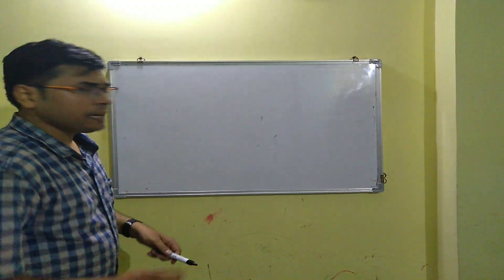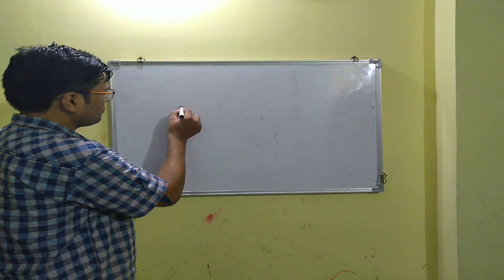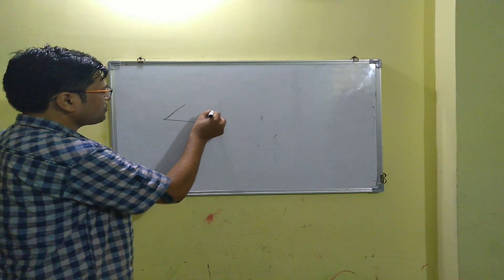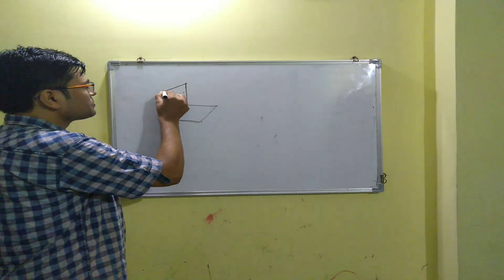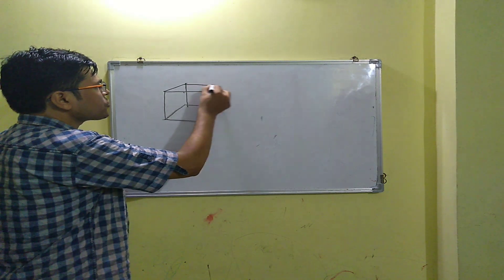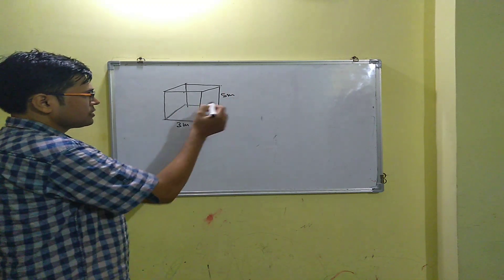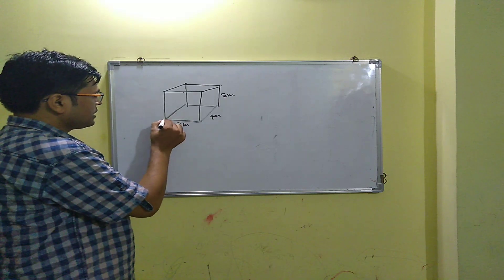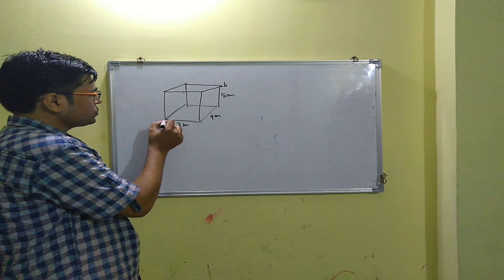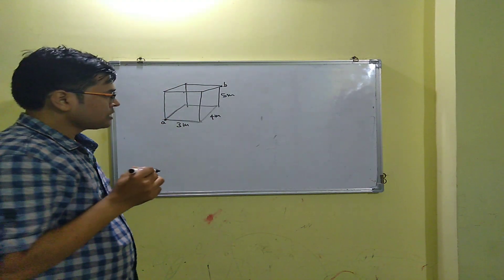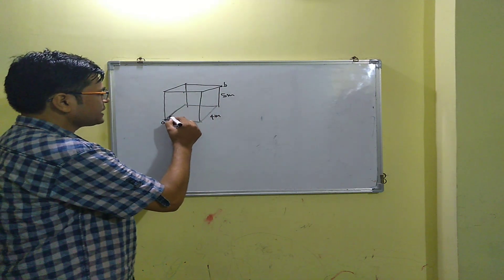The flying part is simple, so let's tackle that first. The dimensions of the room are 3 meters by 4 meters by 5 meters. You can draw it like this — 3 meters, 4 meters, and 5 meters as the height, as given in the question. This is point A where the insect is present, and it has to move to the diagonally opposite point B. For the flying part, the shortest path is simply the diagonal of this cuboid.